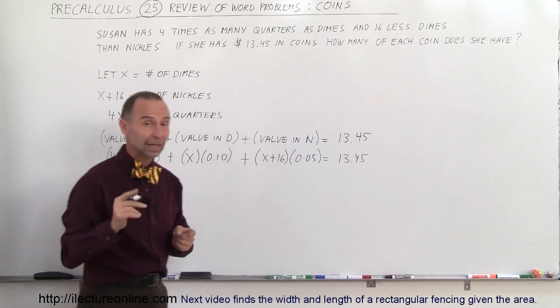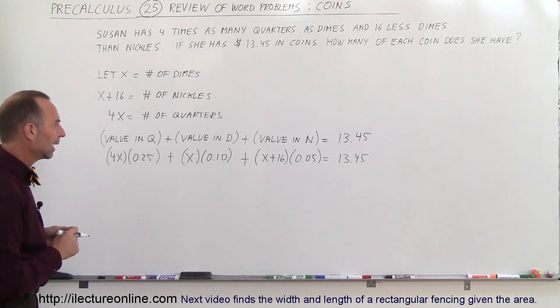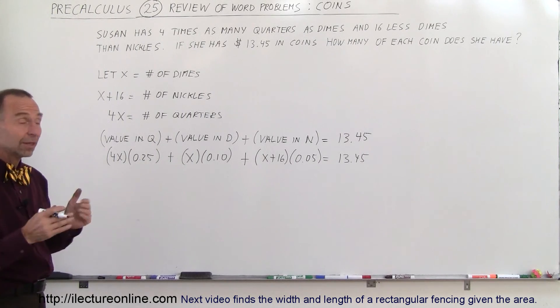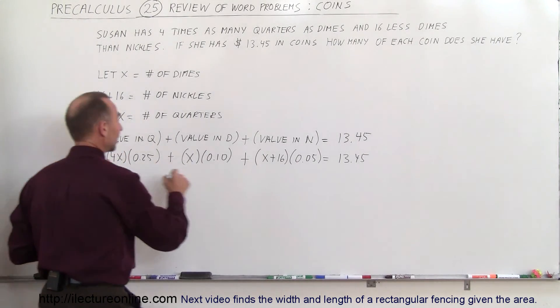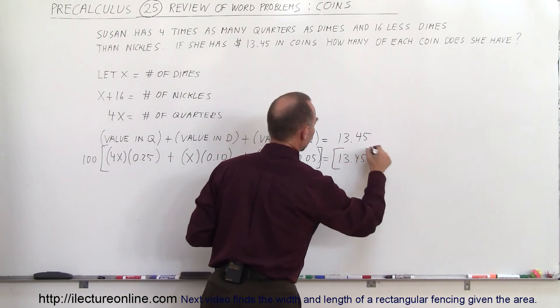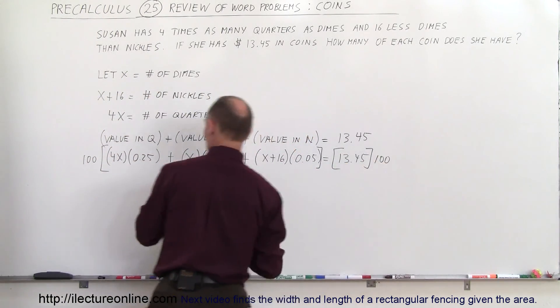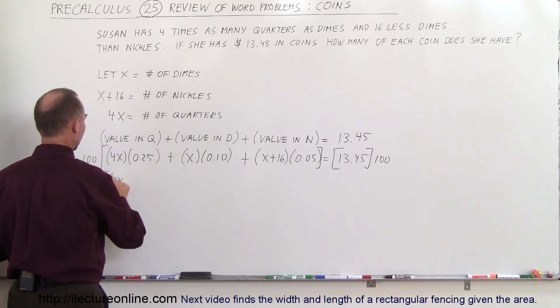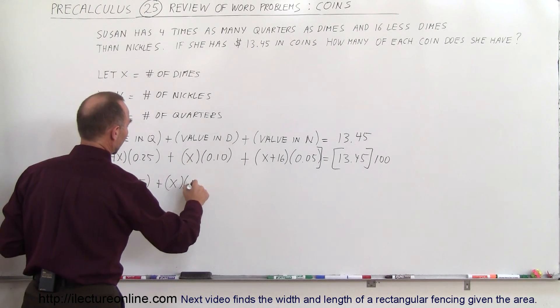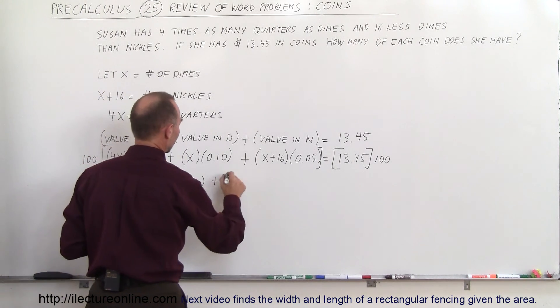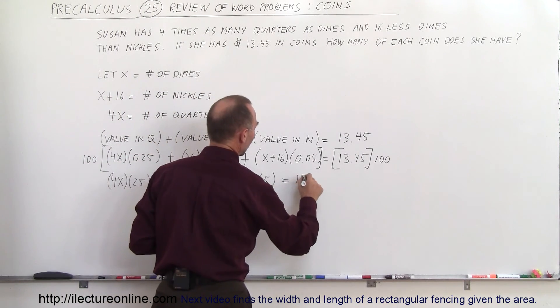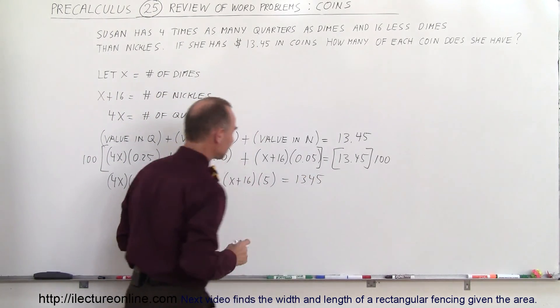And now we have an equation in terms of X. So first of all, it looks like we probably want to multiply both sides by 100 to get rid of the decimal. So let's multiply the left side by 100 and the right side by 100. We have 4X times 25 plus X times 10 plus the quantity X plus 16 times 5, and that should equal 1,345.